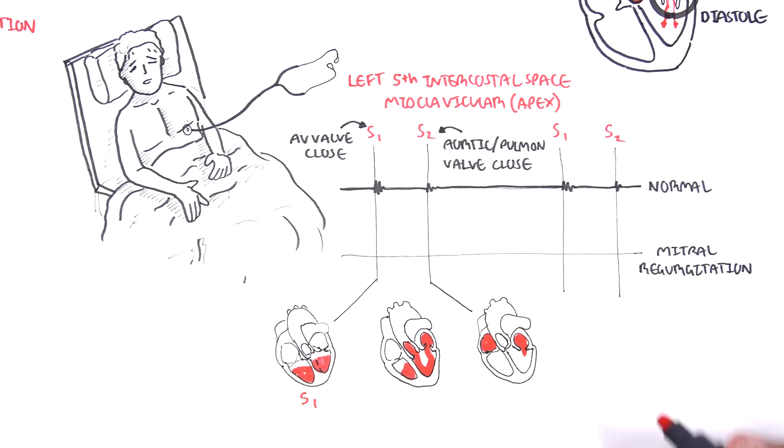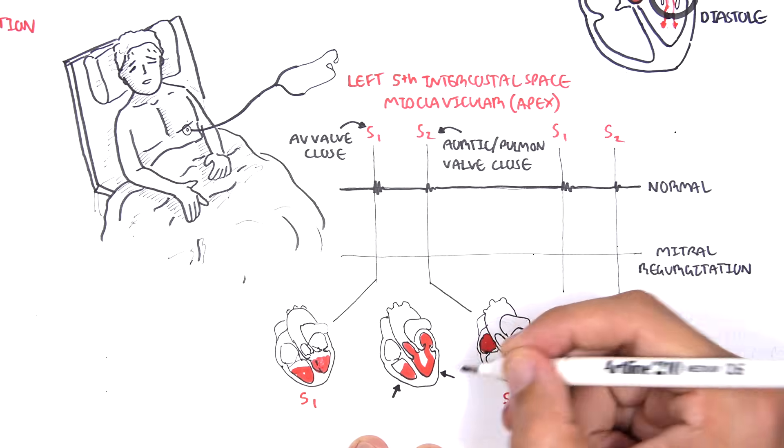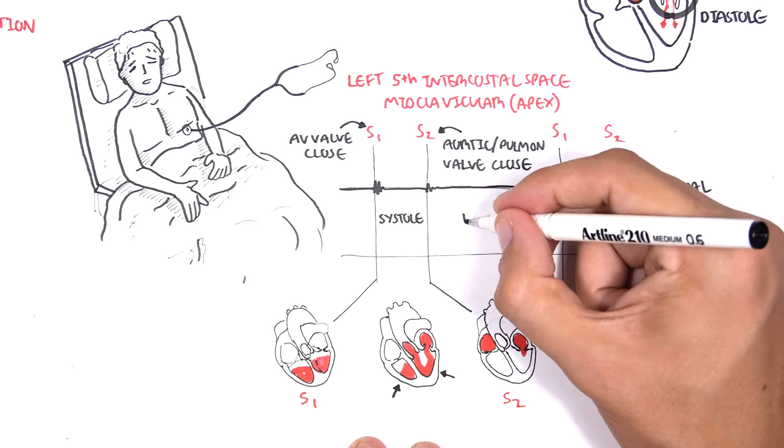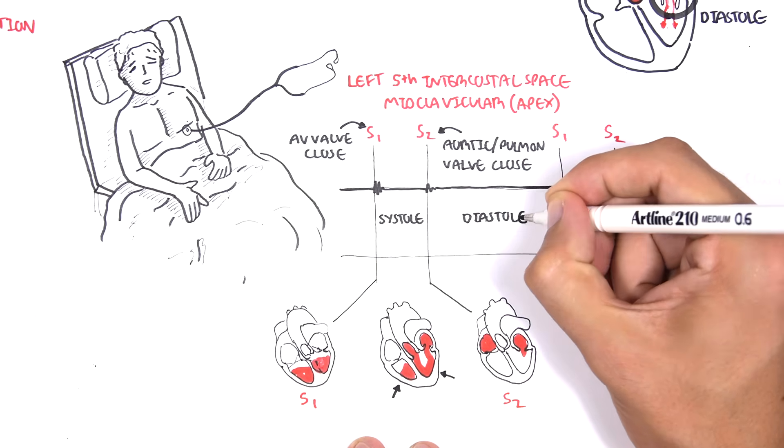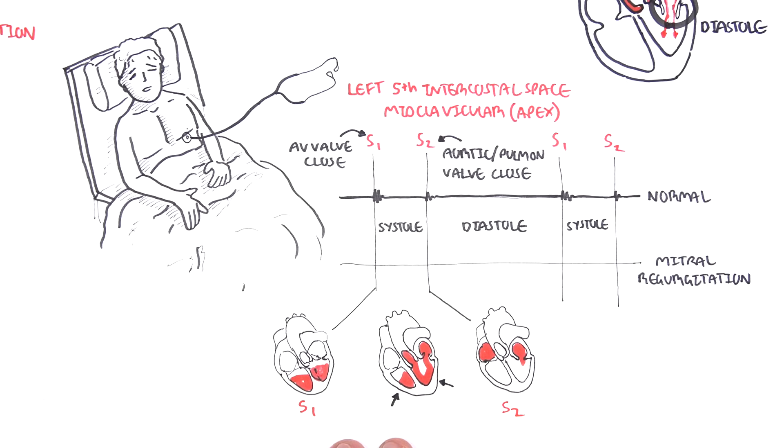S2 is when your aortic valve closes and pulmonary valve closes, allowing the ventricles to fill back with blood from the atria. Thus, we can say that between S1 and S2 is systole, when the ventricles are contracting, and from S2 to S1 is diastole, when the ventricles are relaxed and filling with blood.